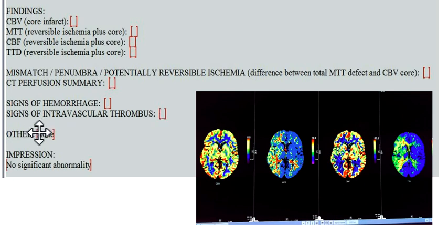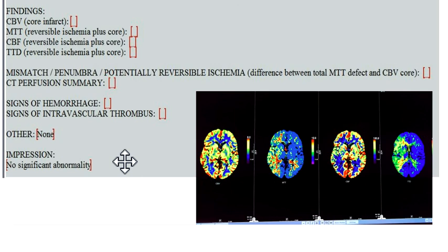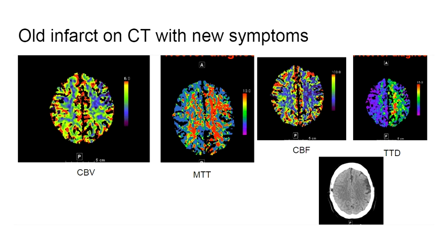Fill in the impression, which in this case would be something like: large amount of potentially reversible ischemia throughout the right MCA territory with no evidence of underlying core infarction. Now let's go through a couple of practice cases.